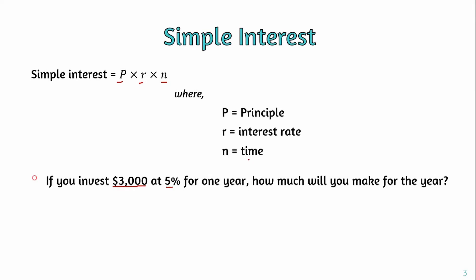Applying the simple interest formula with the principal value, 5% as the rate (which is 5 divided by 100, or 0.05), and time of 1 year, the final result comes out to $150. So that is how the simple interest formula is applied to get this value.